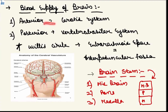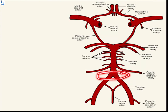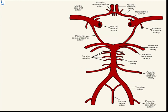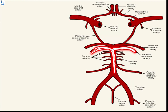Anteriorly, blood supply comes from the carotid system; posteriorly from the vertebrobasilar system. The two vertebral arteries enter the cranial cavity at the level of foramen magnum, also called the pontomedullary junction. They give branches including the anterior spinal artery, posterior spinal artery, and posterior inferior cerebellar artery (PICA). The vertebral arteries then join to form the basilar artery, which gives the anterior inferior cerebellar artery (AICA), which in turn gives the labyrinthine artery.